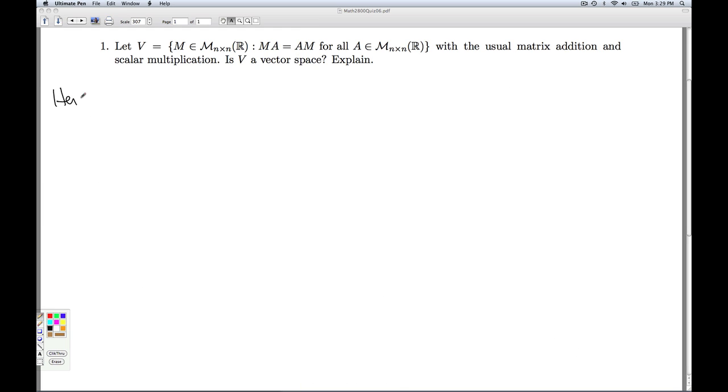So hence, V is a subspace of this guy, of this vector space. And so V is a vector space then in its own right. All the other conditions of being a vector space are taken care of because we've already proved this guy's a vector space. That'll do it then for quiz six.